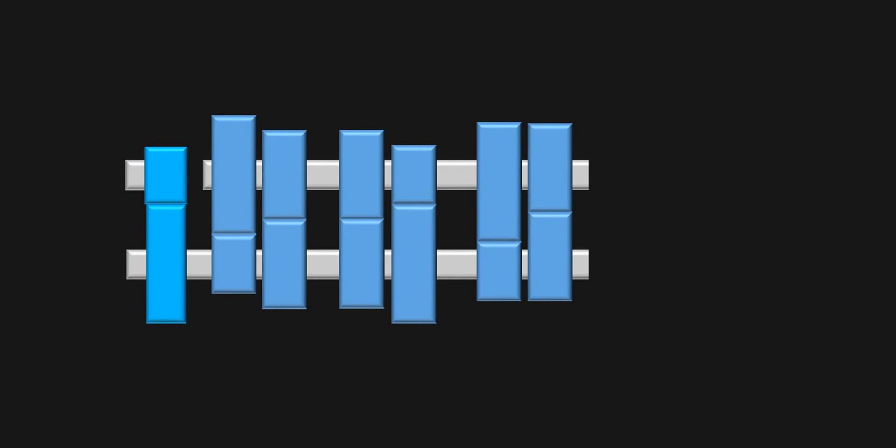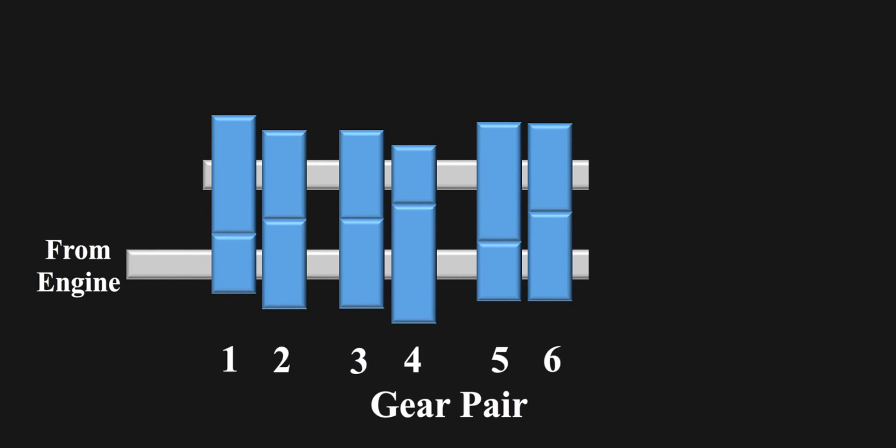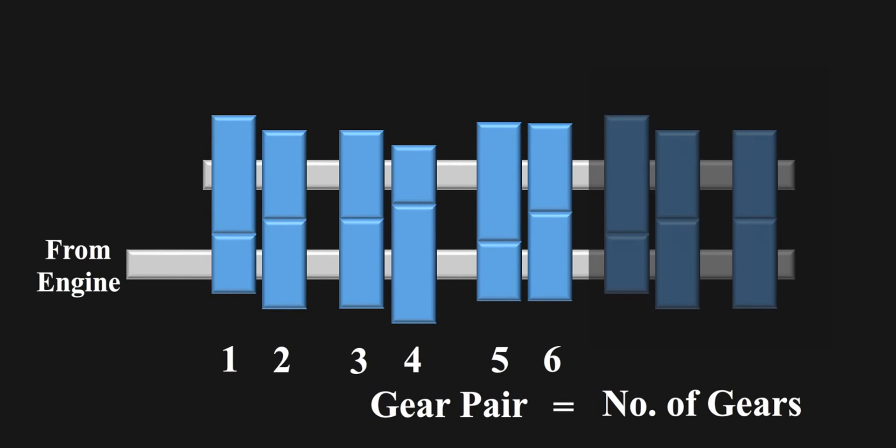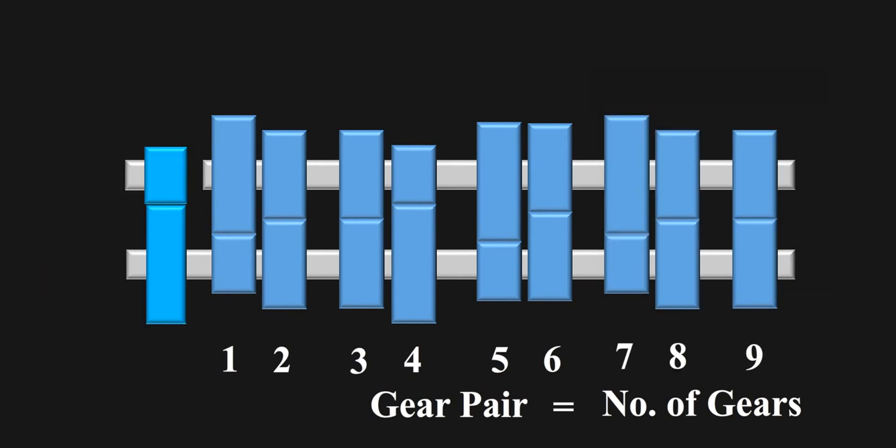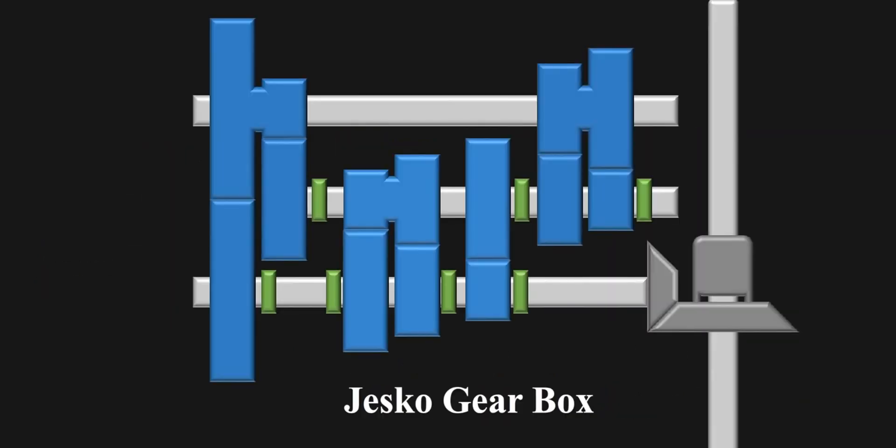In traditional gearbox, you have one clutch shaft, one lay shaft or counter shaft, one main shaft. And in some gearboxes, engine is directly connected here, requiring only two shafts. But in both the cases, one gear pair is required to make each gear ratio, which means number of gears possible are equal to the number of pairs of gear sets. Like, six pairs would make six gears and nine would make nine.